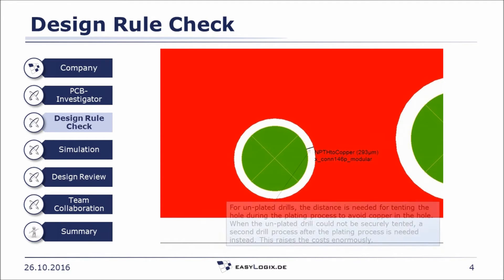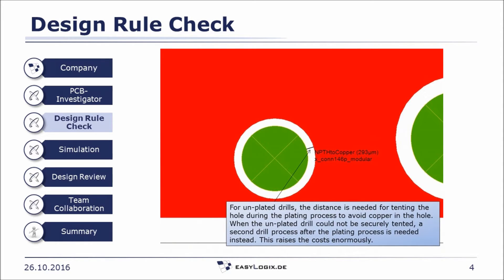Also for unplated drills, a certain minimum distance to surrounding copper should be maintained. The PCB supplier needs this distance for tenting the hole during the plating process to avoid copper in the hole. When the unplated drill could not be securely tented, a second drill process after the plating process is needed instead, which raises the cost enormously.